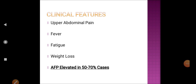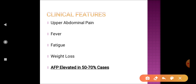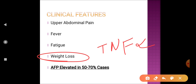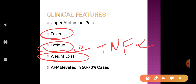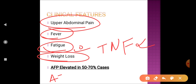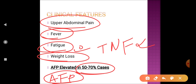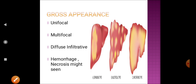The clinical features of hepatocellular carcinoma include weight loss due to activation of tumor necrosis factor alpha, anorexia, prolonged fever, fatigue, and upper abdominal pain due to the liver tumor. If you perform a tumor marker investigation — alpha-fetoprotein estimation — in 50 to 70 percent of cases the alpha-fetoprotein level is elevated.